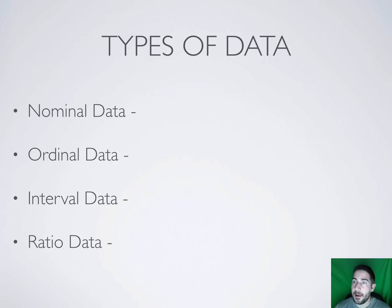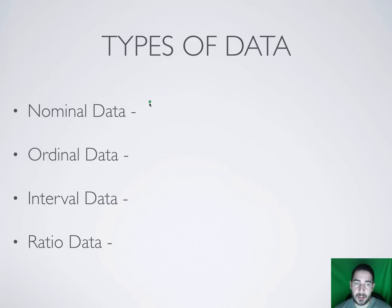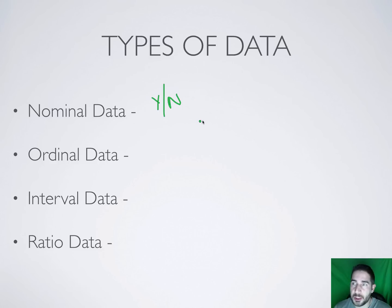Jumping right in, we've got four types of data: nominal, ordinal, interval, and ratio. Nominal data is just answers or responses to a question — it's not in the book, so pay attention. Yes/no questions are nominal data. If I ask which do you like better, chocolate, pistachio, or vanilla ice cream, that's nominal data. It's just one response with no rank order.